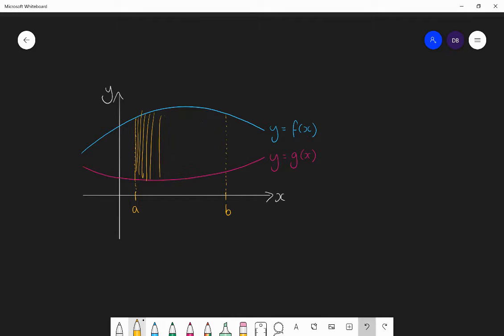So each of those rectangles are infinitely thin. And their width will be the value of h that we choose, and we're trying to make h as small as possible. And their height will be the value of y from f of x subtract the value of y from g of x. So that height will be f of x minus g of x. So if I integrate f of x minus g of x between a and b, I will get the area I want.